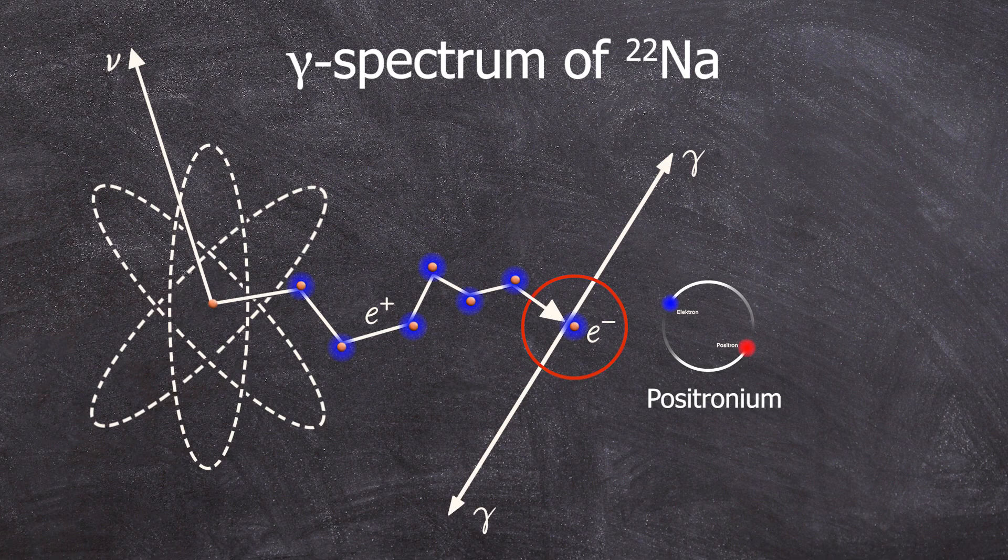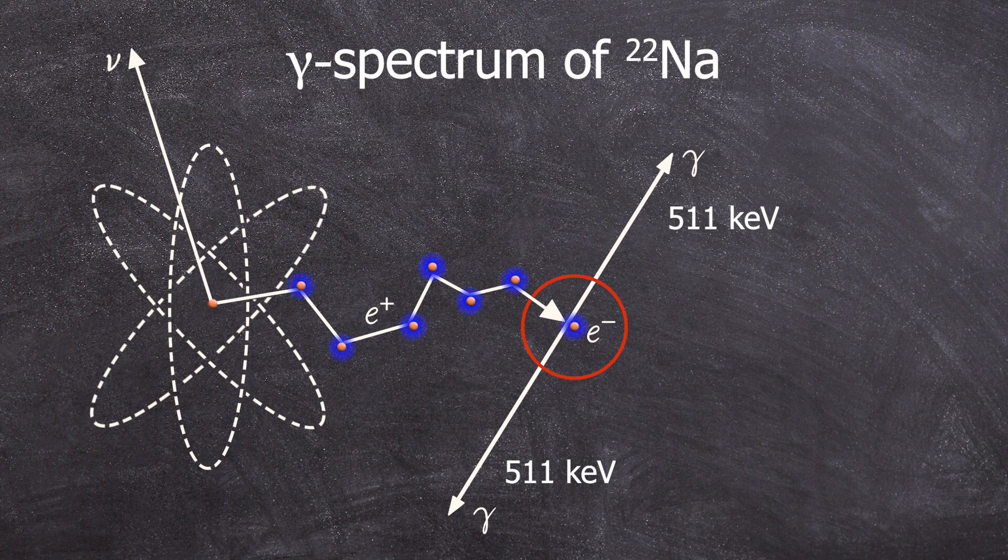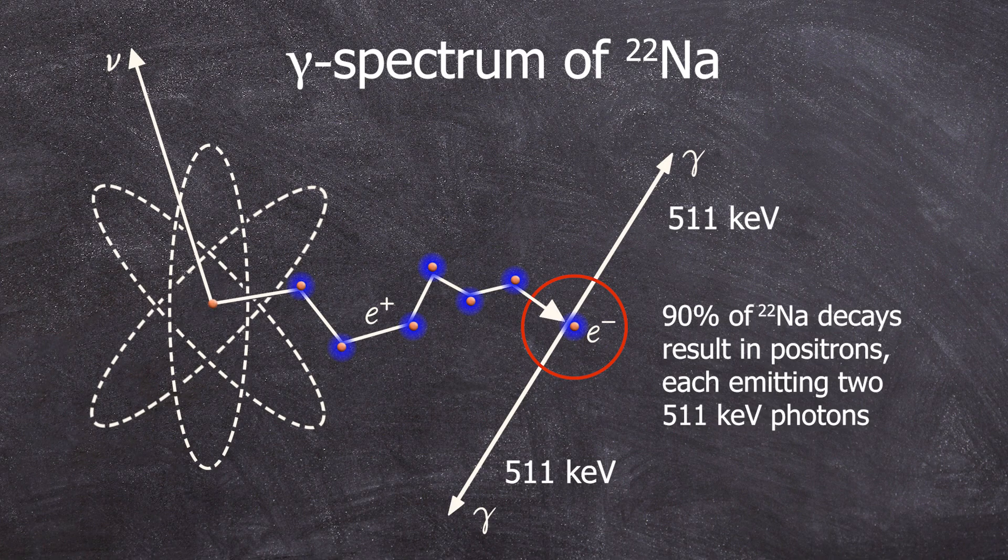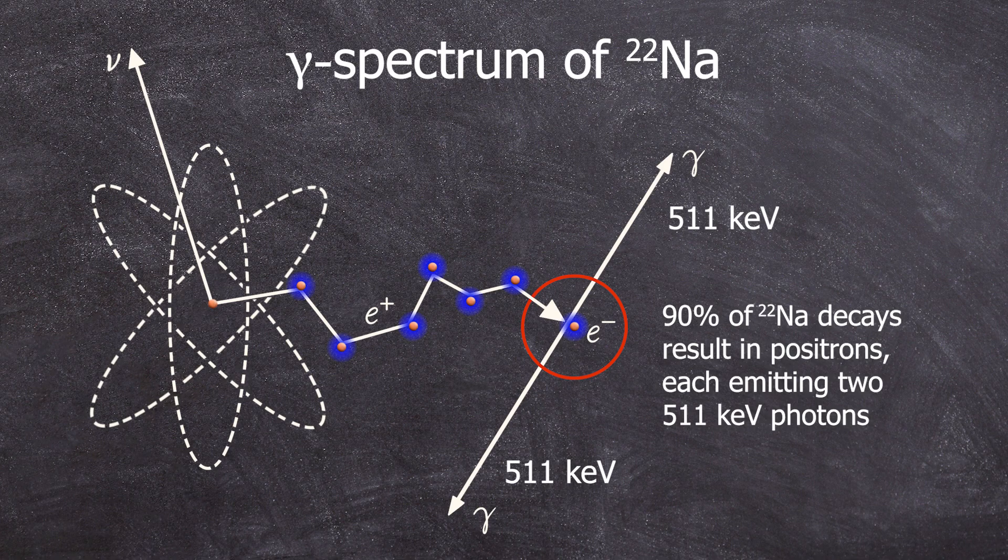During this process, two 511 keV gamma rays are emitted, so the occurrence probability of the 511 line due to the decay is twice as high as the 90% probability of the positron creation, so it's 180%. That's definitely higher than the 99.94% probability of the 1,274 keV line.